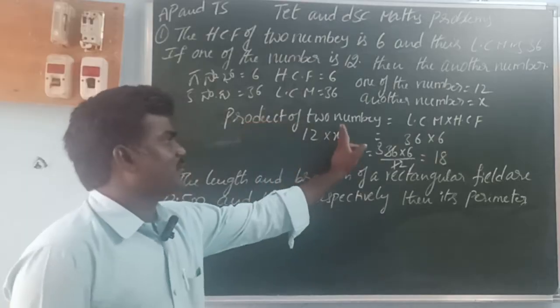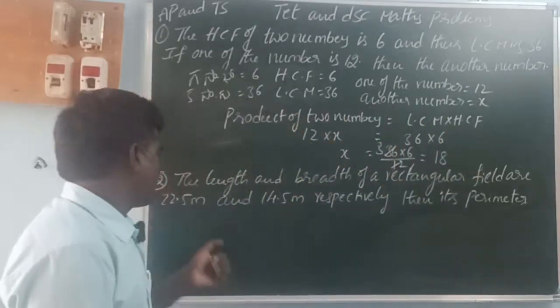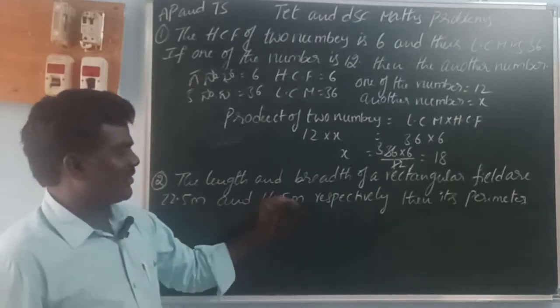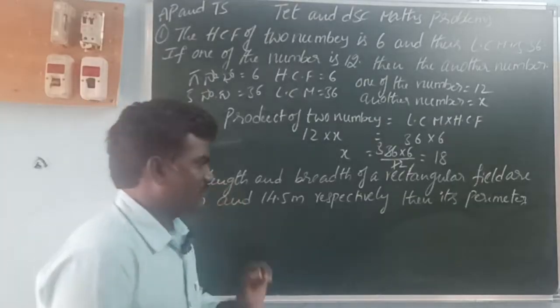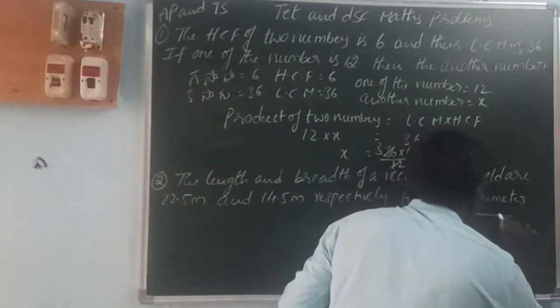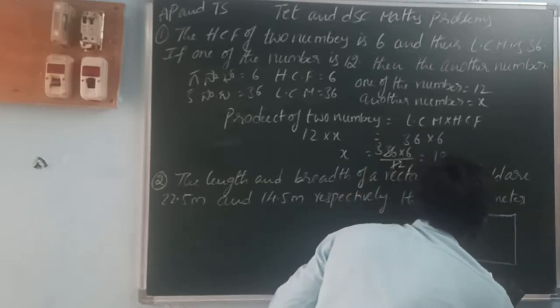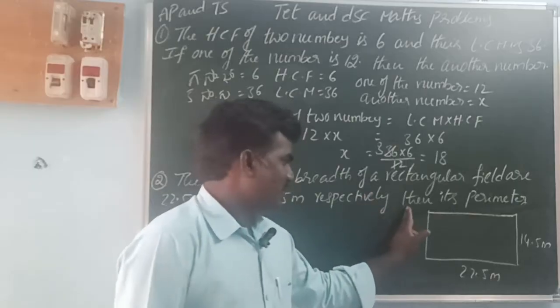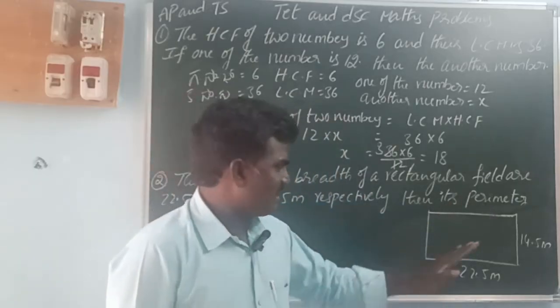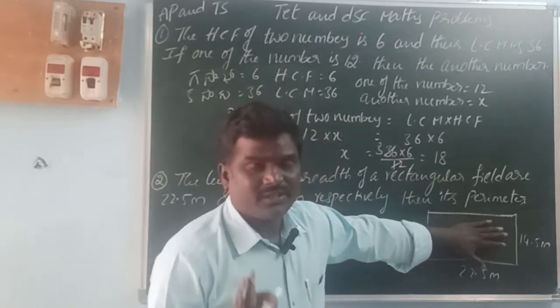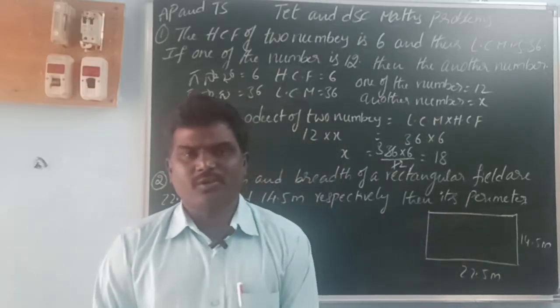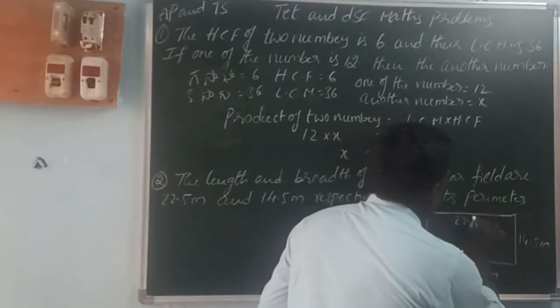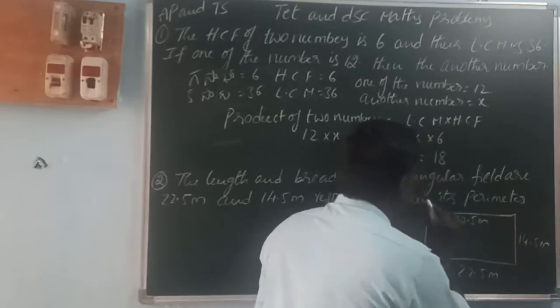Second problem: The length and breadth of a rectangular field are 22.5 meters and 14.5 meters. So this is the rectangle field. What is the perimeter? Perimeter means the sum of all sides. There are 4 sides, and opposite sides are equal.